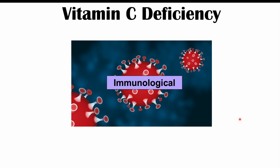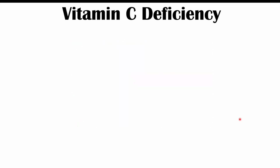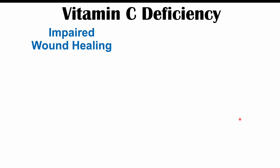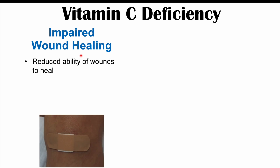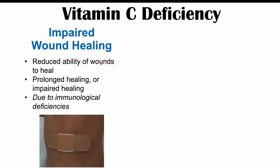The next category of signs and symptoms is immunological. Vitamin C is important in immunological functioning. One key aspect is wound healing — if there is a vitamin C deficiency, even subclinical, we can have issues with wound healing. Wounds take longer to heal and don't heal as they should. This can be due to immunological deficiencies, since white blood cells use a lot of vitamin C, but also because vitamin C is important for collagen synthesis.